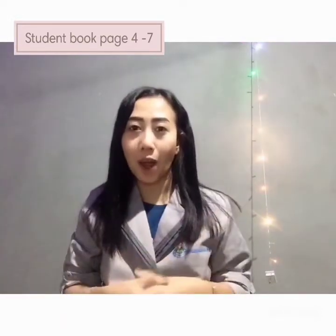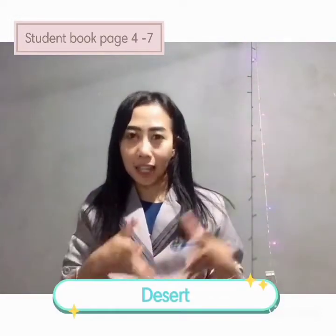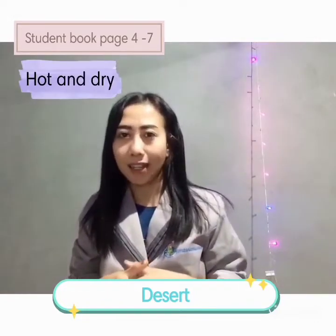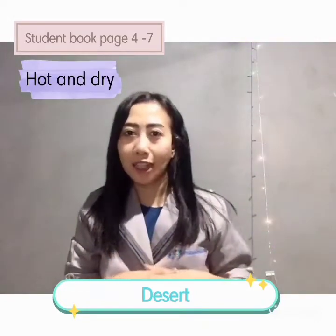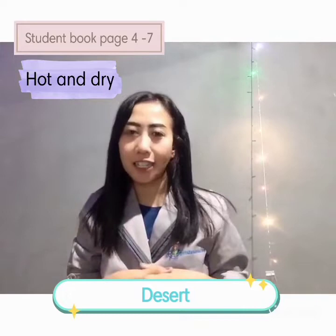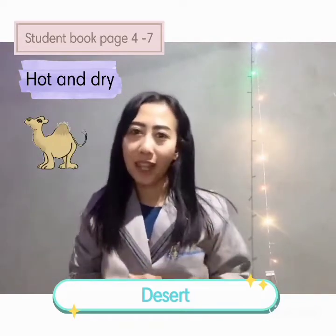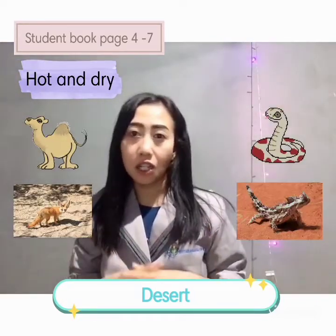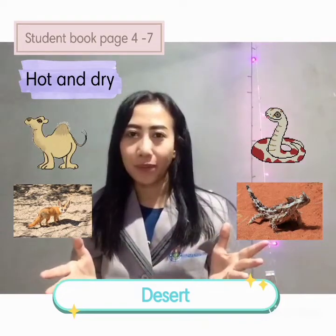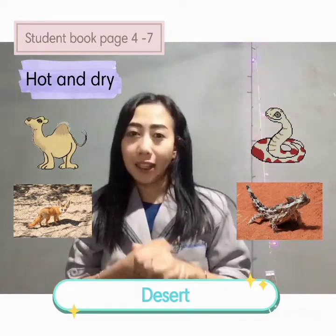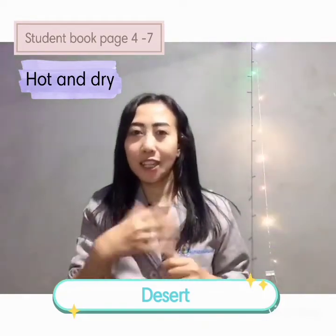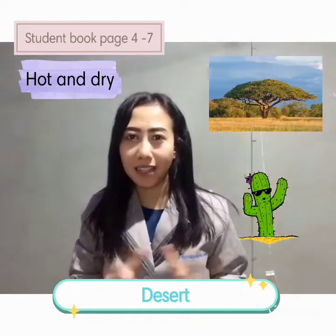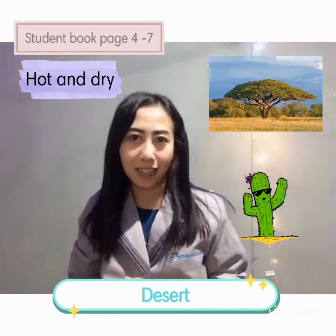The second one is desert. The environment of the desert is hot and dry. The animals that live in the desert, for example, camel, desert fox, snake, lizard, and etc. The plants that live in the desert, for example, acacia tree and cactus.